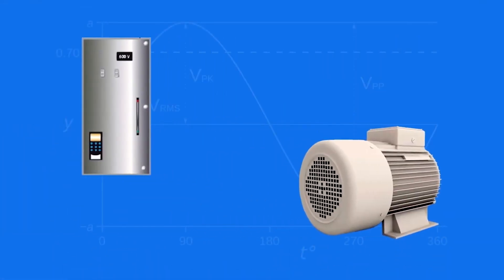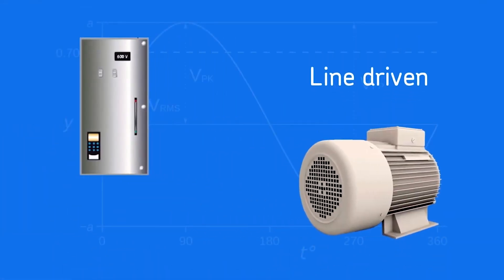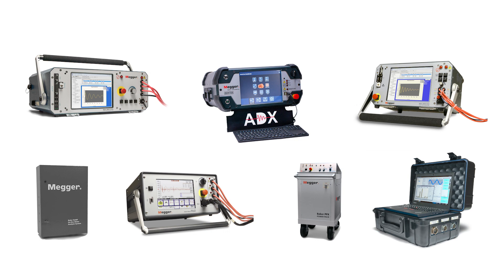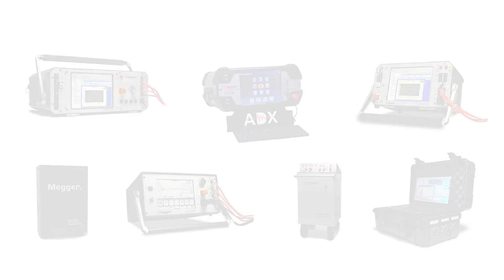All operating point measurements can be done on line-driven and VFD-driven machines. Monitor your entire machine systems with Baker Instruments electric motor condition monitoring solutions — doing so will help give you early warning of failures and allow you to take action to extend machine life. For more information about Megger Baker Instruments electric motor test equipment, go to Megger.com/Baker.